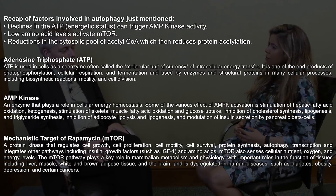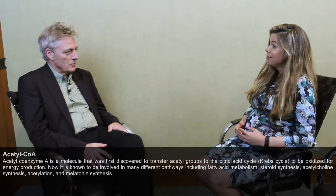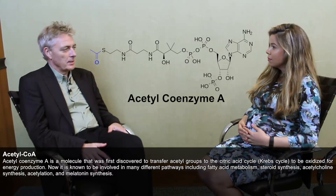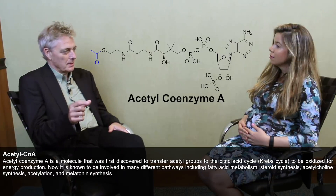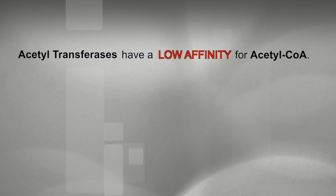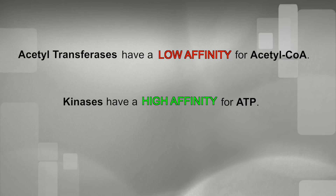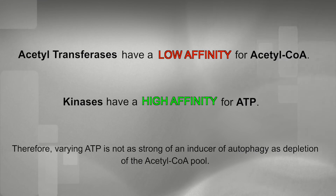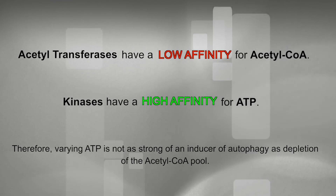It's actually extremely easy when you think about basic biochemistry. One of the central metabolites is acetyl-CoA. The cytosolic pool of acetyl-CoA determines the level of protein acetylation, because acetyltransferases use the acetyl moiety of acetyl-CoA to transfer it onto lysine residues in proteins. Acetyltransferases have a low affinity for acetyl-CoA compared to kinases, which have a high affinity for ATP. So varying acetyl-CoA concentrations has a major impact on the acetylation level of cellular proteins, whereas varying ATP concentration has little impact on phosphorylation reactions.